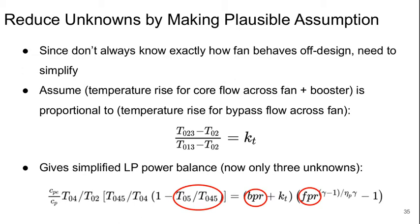There's one too many unknowns here for us to really be able to proceed. So we have to make some kind of plausible simplifying assumption. What we will assume is that the temperature rise for the core flow across the fan plus the booster together is proportional to the temperature rise for the bypass flow across just the fan. So in other words, T0.2.3 minus T0.2 over T0.1.3 minus T0.2 is a constant which we'll call KT.